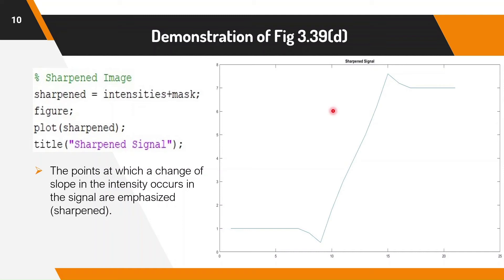Observe that negative values were added to the original signal. Thus it is possible for the final result to have negative intensities if the original image has any zero values, or if the value of k is chosen large enough to emphasize the peaks of the mask to a level larger than the minimum value in the original. Negative values would cause a dark halo around edges which, if k is large enough, can produce objectionable results.